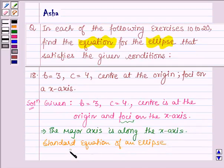And thus the standard equation of an ellipse is given by x-square upon a-square plus y-square upon b-square is equal to 1,